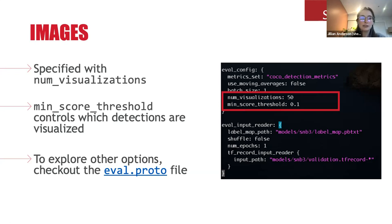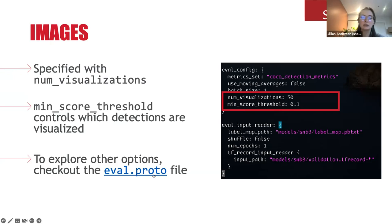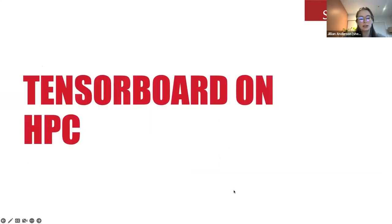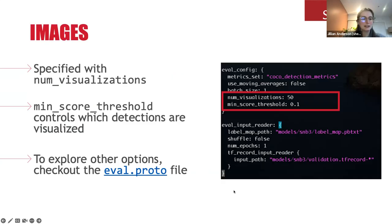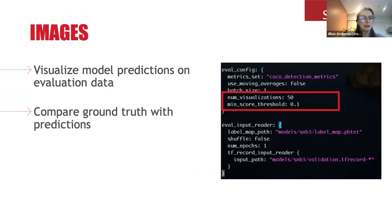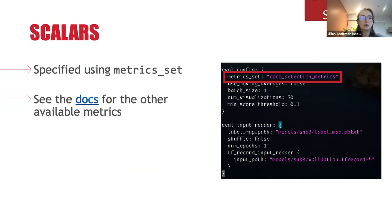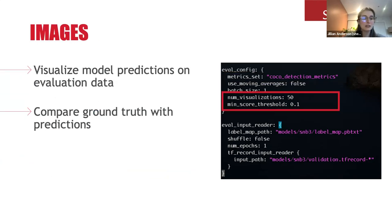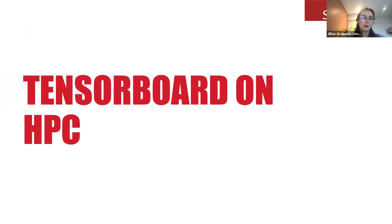With those two things, there'll be a new tab in TensorBoard where you get to see those images. There are lots of other options available for choosing which boxes should be shown, what photos should be used, and whether any pre-processing should be done on those images. I've linked to the eval.proto file, which goes through all of those options.